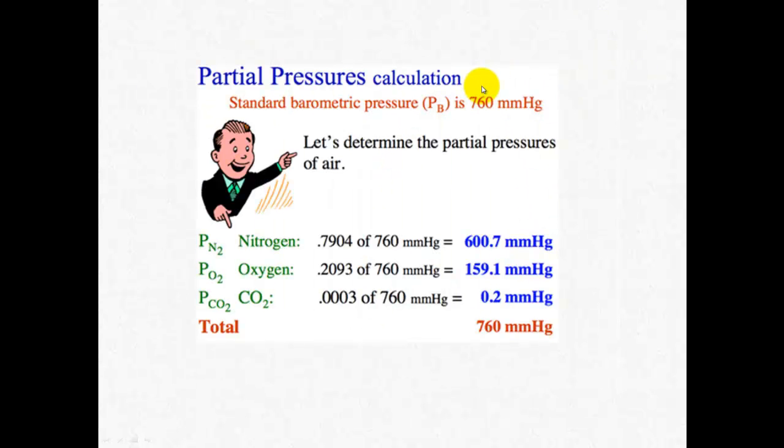Here's just another calculation here and it's important to note that you need to have everything in the same unit. So nitrogen is contributing 600.7, oxygen 159.1 and CO2 0.2. You add them all together and you get 760 millimeters of mercury.